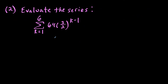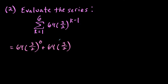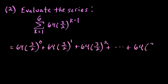For the second question, we evaluate the series from k equals 1 to 6 of 64 times 3 halves to the k minus 1. Expanding this out: when k equals 1 we get the 0 power, when k equals 2 we get the 1st power, and so on up to when k equals 6, giving 3 halves to the 5th. We can see we're adding 6 terms because we're going from k equals 1 to 6.